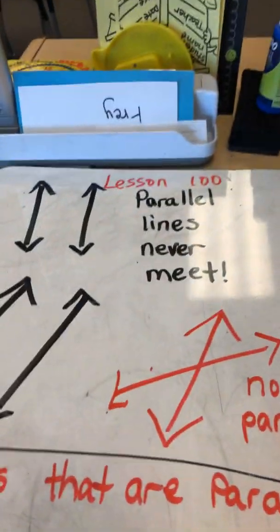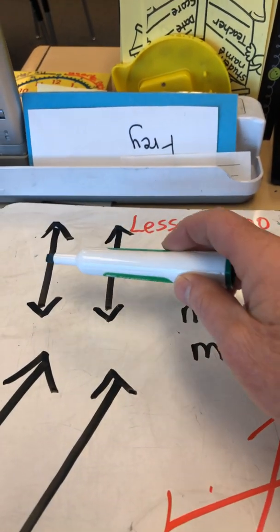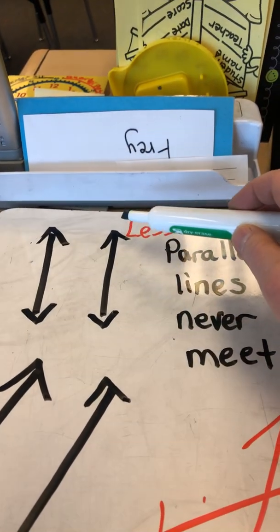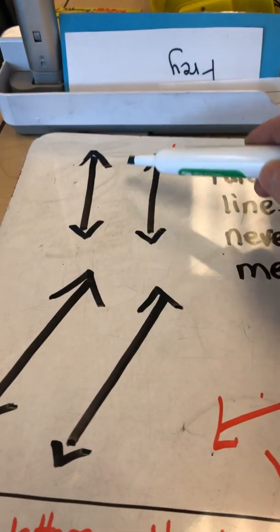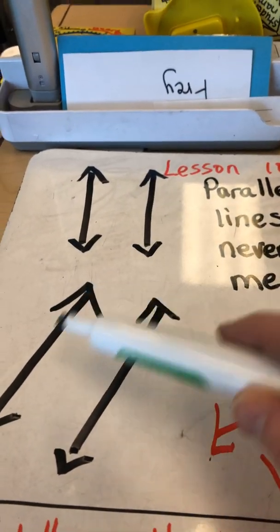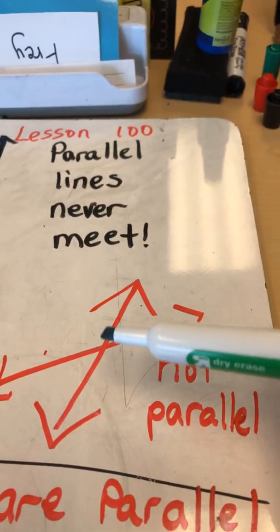Okay, so here is my whiteboard to show you that parallel lines never meet. So if they kept going up where the arrow is pointing up or down, they would never meet. They can go vertical, oblique, but if they cross each other they are not parallel.